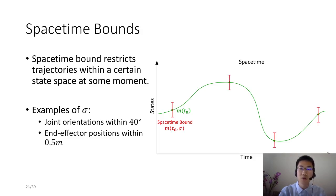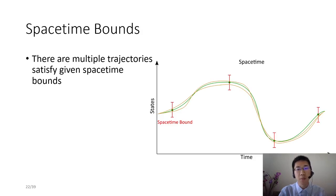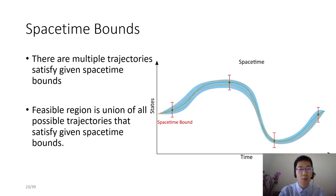Here we show three more spacetime bounds. Each restricts trajectories within a region at some moment. There are multiple physically plausible trajectories satisfying spacetime bounds. They are all treated equally in our framework. We define feasible region as a union of all possible trajectories that satisfy given spacetime bounds.